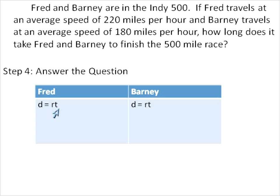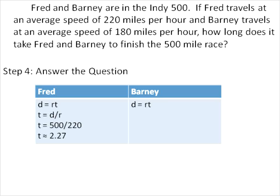I've got my equation d = rt, and I'm transforming it to solve for t. I'll plug in the information I know. For Fred, the distance is 500 miles, and his rate is 220 miles per hour. When I substitute that information and divide, t is approximately equal to 2.27 hours. That's Fred's time.